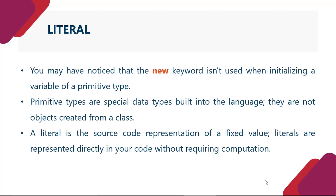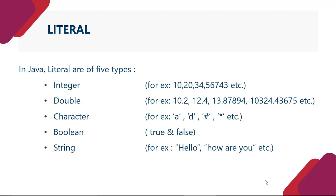Ab literal kya hota hai? Jaisa ki aapne notice karaya ki new keyword is not used when initializing a variable of a primitive type. Jaise ki hum object mein use karte the ki object ko jab bhi hum memory allocate karate the, initialize karte the, to hum new keyword ka use karte the. Lekin variable ke case mein aisa nahin hota. Primitive types are special data types built into the language. They are not objects created from a class. A literal is a source code representation of a fixed value. Literals are represented directly in your code without requiring computation.